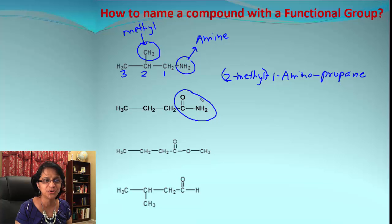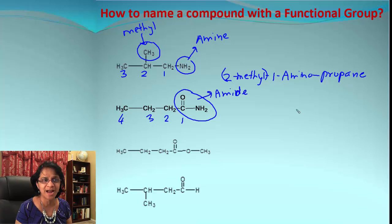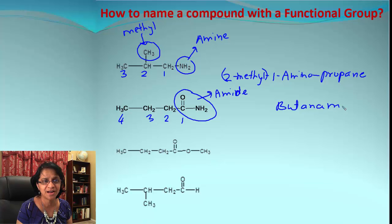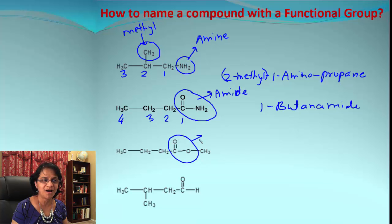How about the next one? Look at CONH₂ — that is an amide. We count the carbon atoms including the one belonging to the functional group, ending up with four carbon atoms, making this butane as the chain. Since we have the amide group it is butanamide, and the position of the amide group is at one, so that's 1-butanamide.